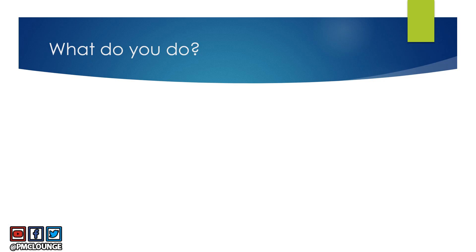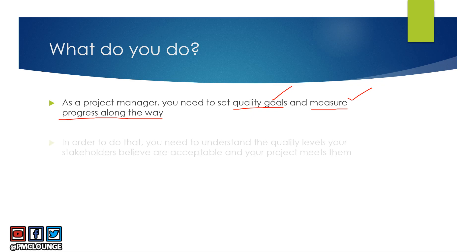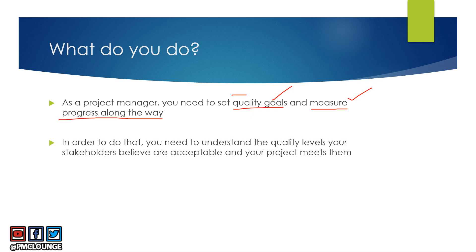So you now know there is some difference between the everyday word 'quality' and the word quality in project management. As a project manager, the first thing you need to do is set quality goals — and not just that, you need to measure progress along the way to see whether you are meeting those goals. In order to do that, you need to understand the quality levels your stakeholders believe are acceptable, and ensure your project meets them.